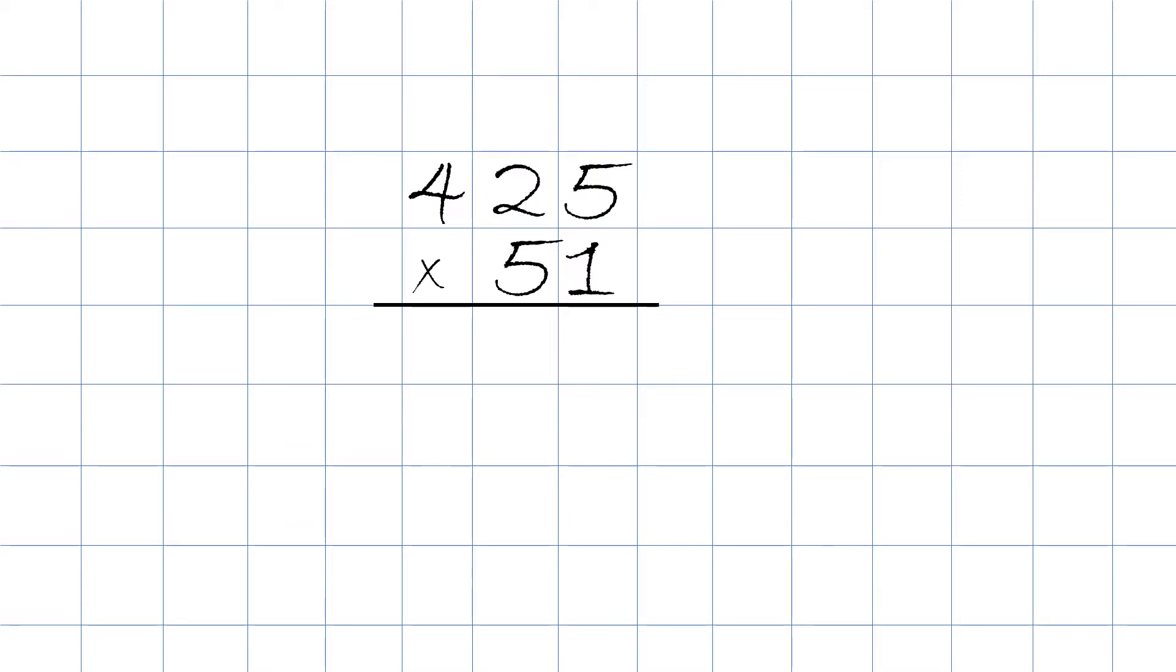I'm going to switch to red arrows. 1 times 5 will be 5, 1 times 2 will be 2, and 1 times 4 will be 4.